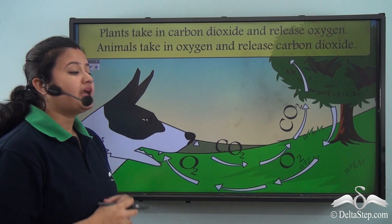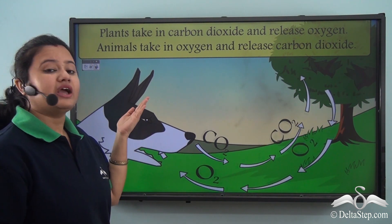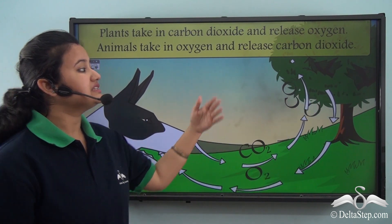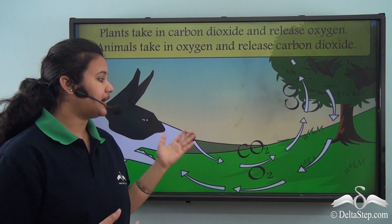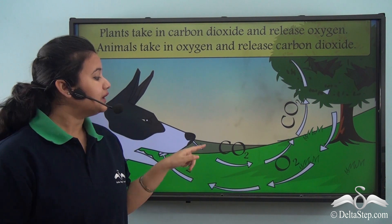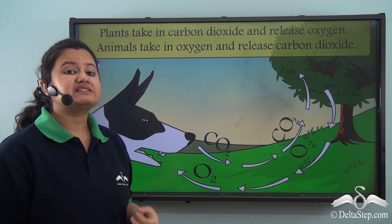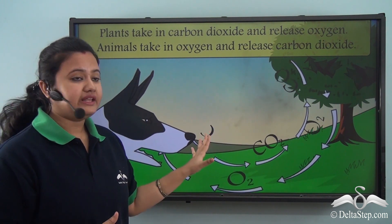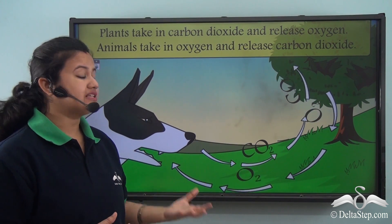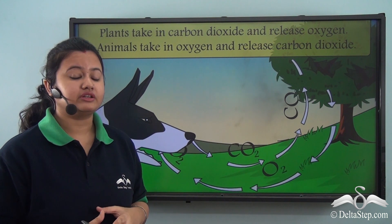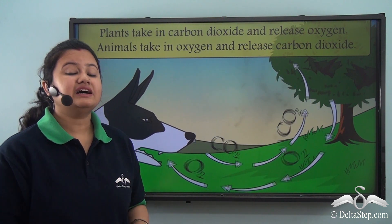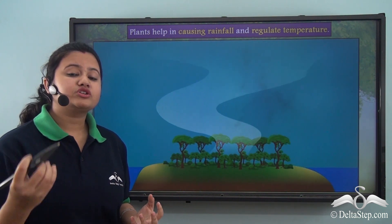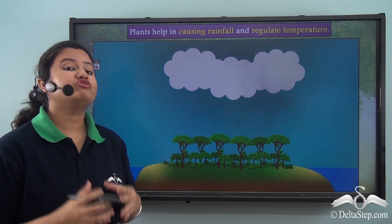Plants provide us with oxygen that we breathe in, and in turn the carbon dioxide gas exhaled by human beings and animals is absorbed by plants. Thus there is a constant exchange of gases between plants and animals. This oxygen given off by plants is very important as it helps us perform all metabolic activities. So plants are indeed very useful for us - they are the natural supplier of oxygen on earth. In other words, plants act as the lungs of our mother earth.